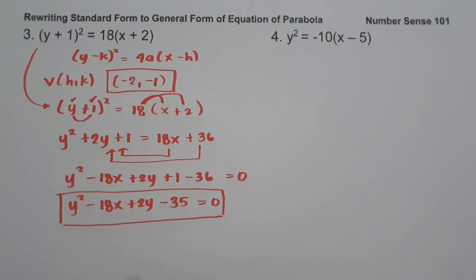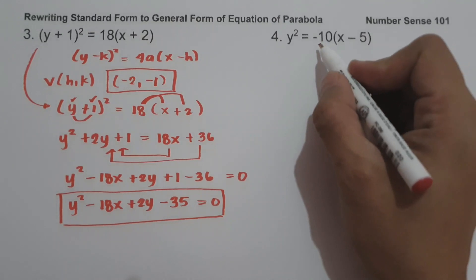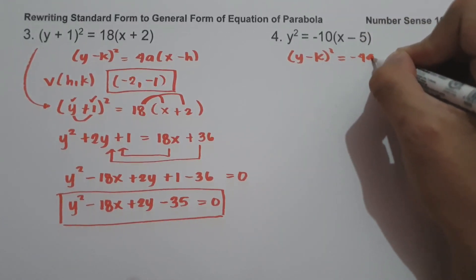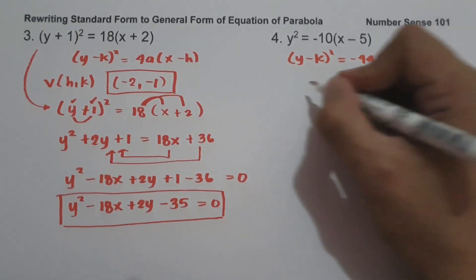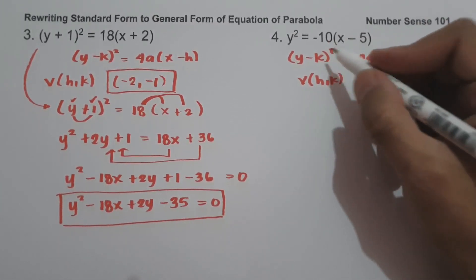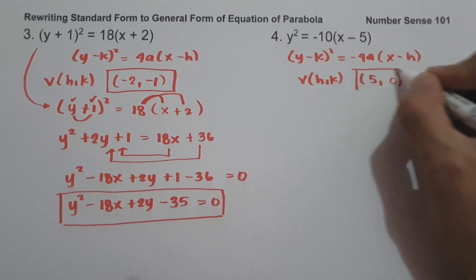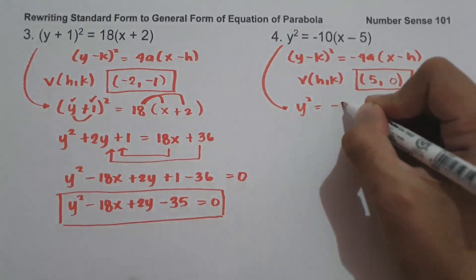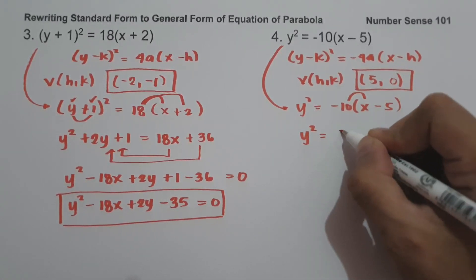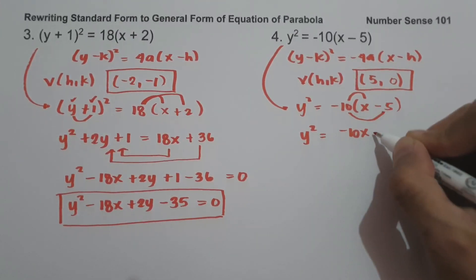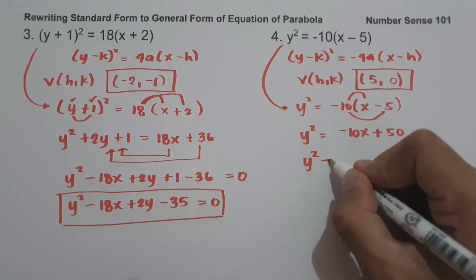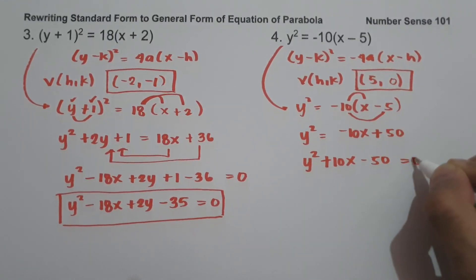On number 4, we have y² = −10(x − 5). Since the coefficient is negative, the equation is in the form (y − k)² = −4a(x − h). The vertex is h = positive 5, and k = 0 since we don't have k in our equation. Expanding: negative 10 times x is negative 10x, and negative 10 times negative 5 is positive 50. Moving terms over: y² + 10x − 50 = 0. And this will be our answer.